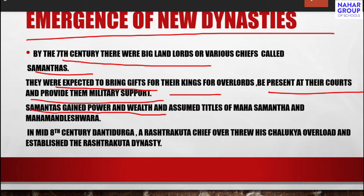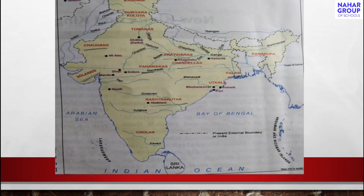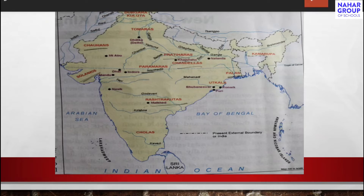Samantas gained power and wealth and assumed titles of Mahasamantas and Mahamandalishwaras. In the 8th century, Dantidurga was a prominent Samanta. This is the map of India from AD 800 to 1200.